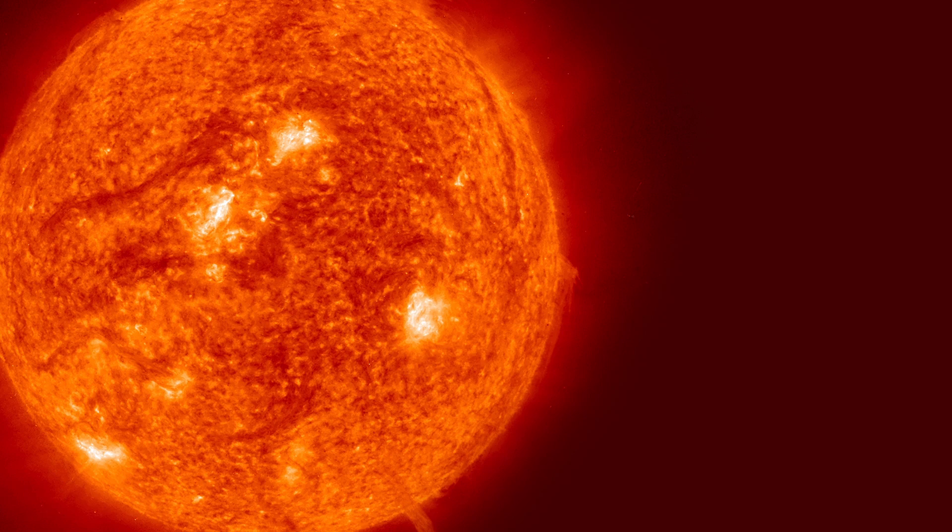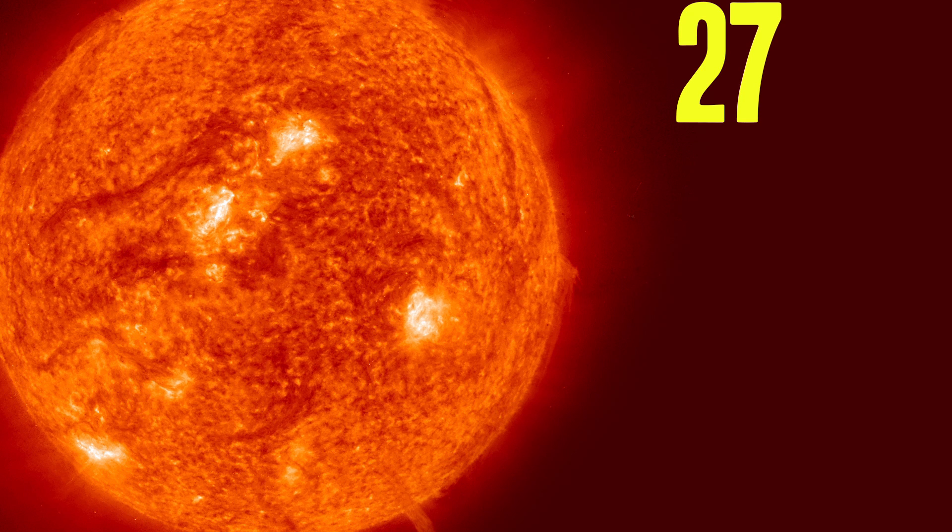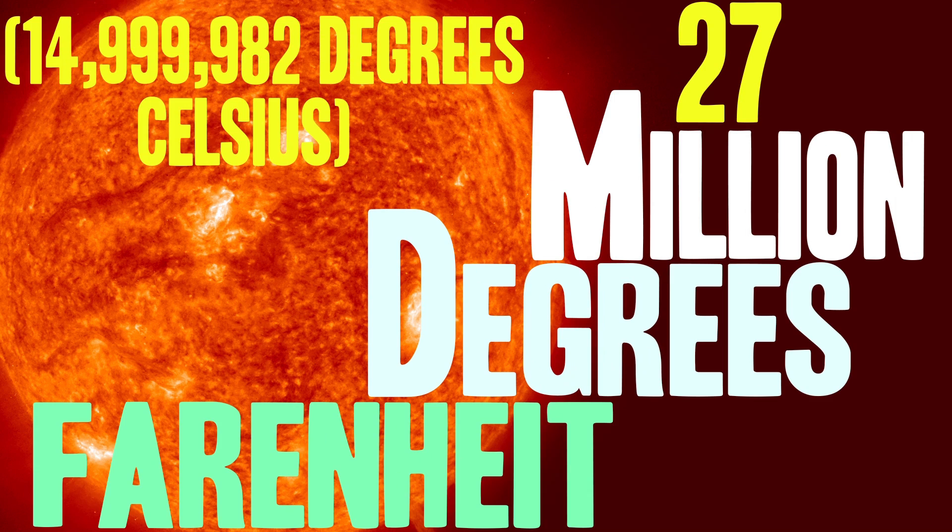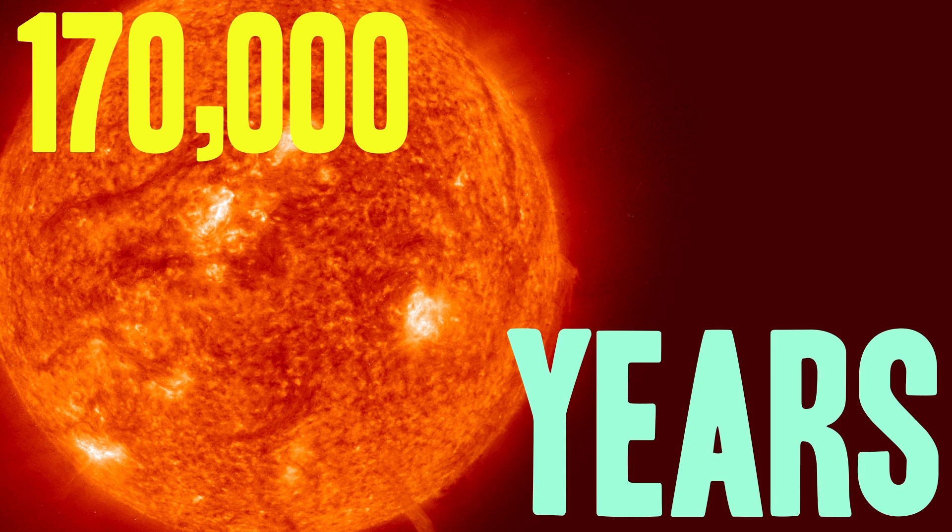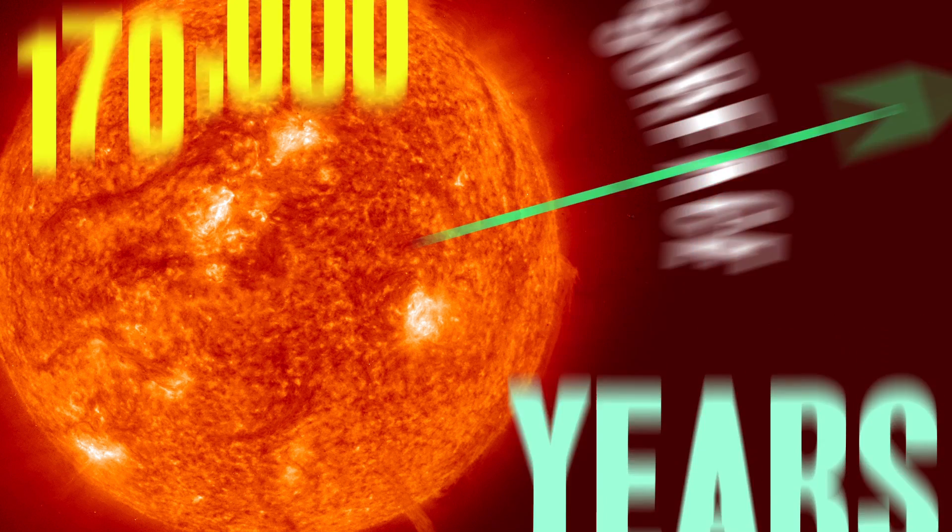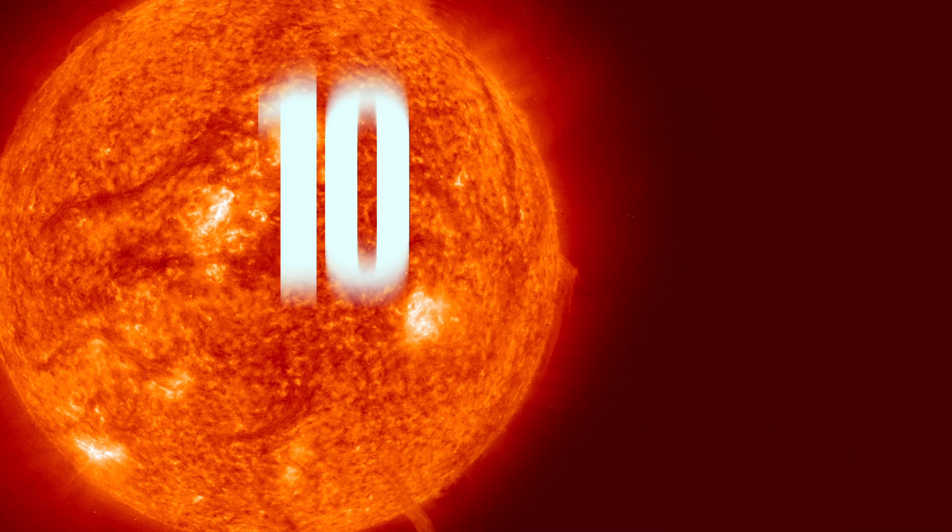And that started off a chain reaction that became the power of our sun. So now, at its core, where all the real interesting action happens, the temperature there is about 27 million degrees Fahrenheit. From there, it takes about 170,000 years for that energy to reach the surface of the sun, and by that time it's cooled to a balmy 10,000 degrees.